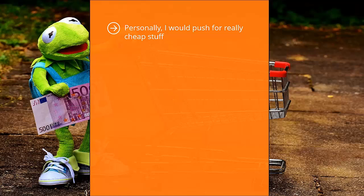Let your system send out these offers and set up your email management software to automatically unsubscribe people who buy these one-dollar items. Here's how you set it up — it's actually quite simple. When you send out your updates to your general information list, these updates will contain a link to your sales pitch. When people click that link, they see a purchase button.